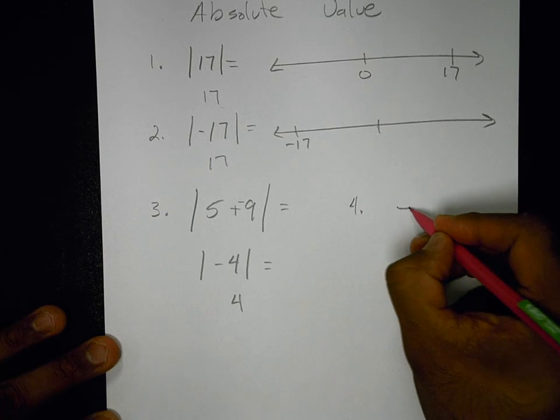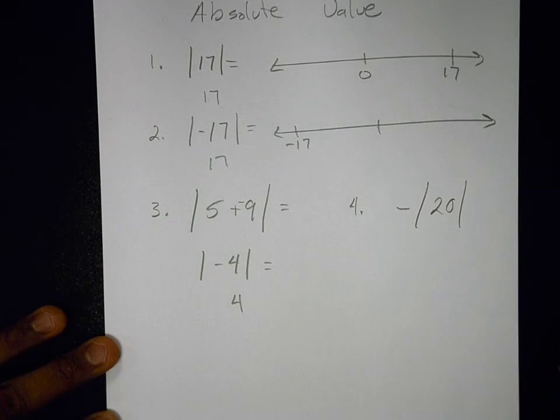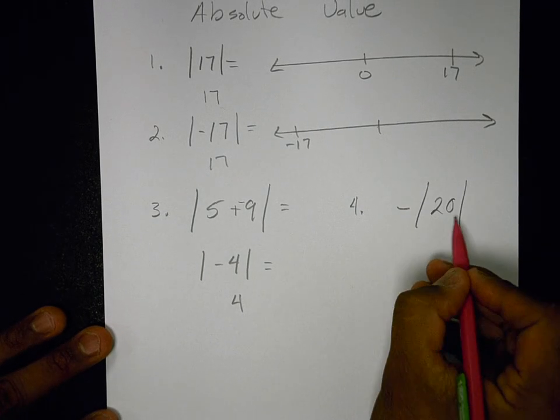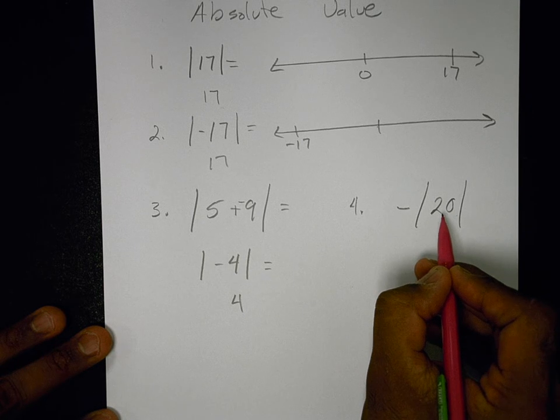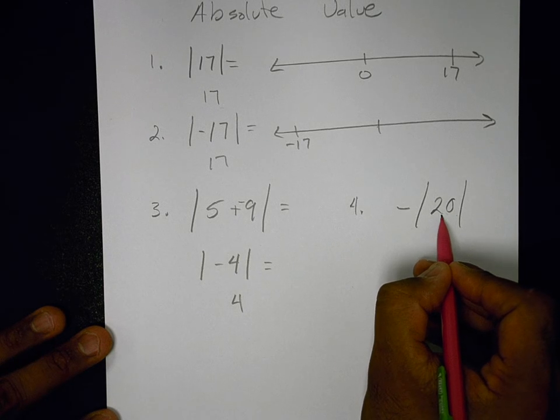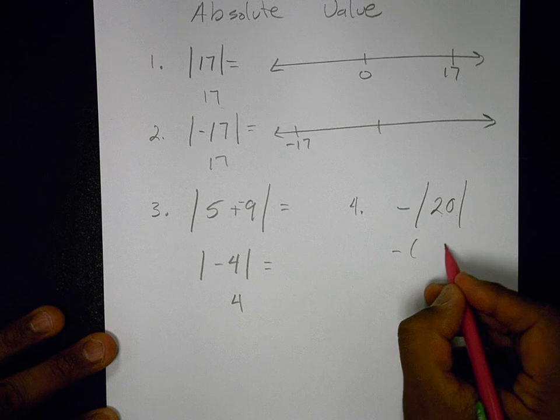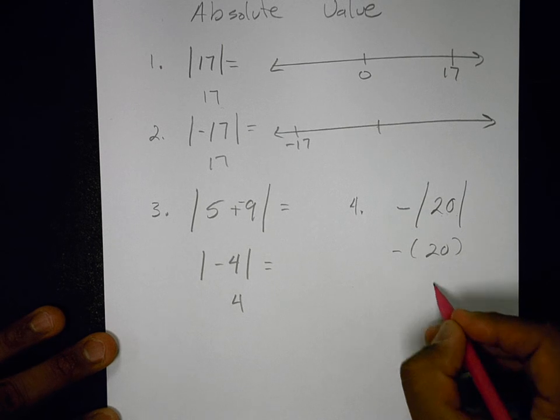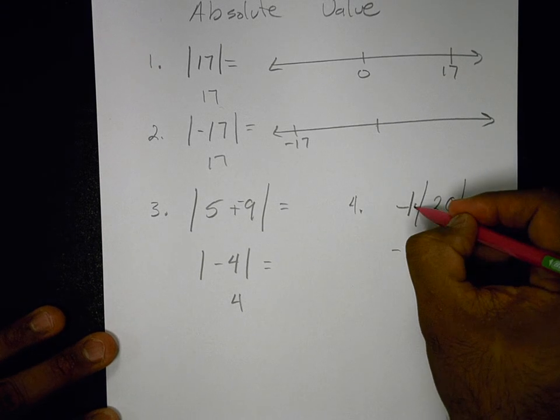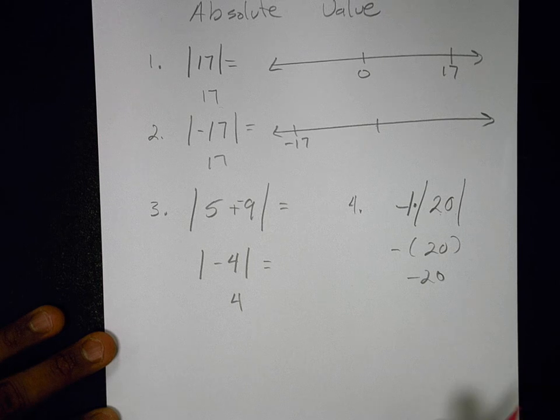Let's look at another one here. This says negative absolute value. How far is 20 from 0? It's 20 spaces. And then I have the negative out front. I could think of this as like multiplying by negative 1. So the answer is negative 20.